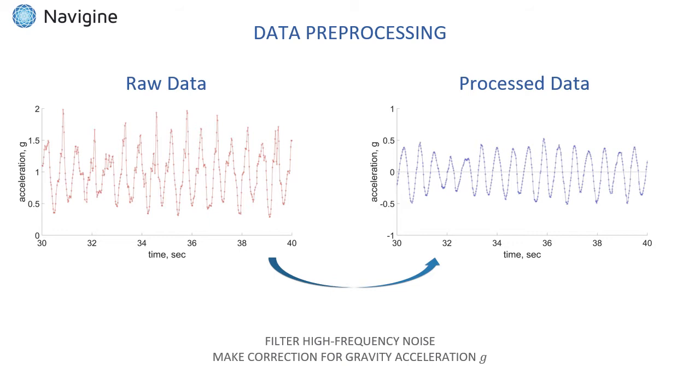Thus, before proceeding to analysis, one must first filter high-frequency noise from the measurements using low-pass filters, and then adjust the incoming measurements for gravity acceleration g, as it is always present and doesn't bring useful information.